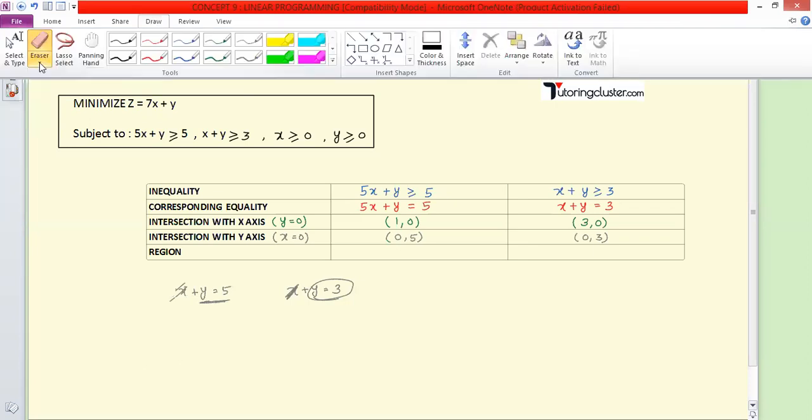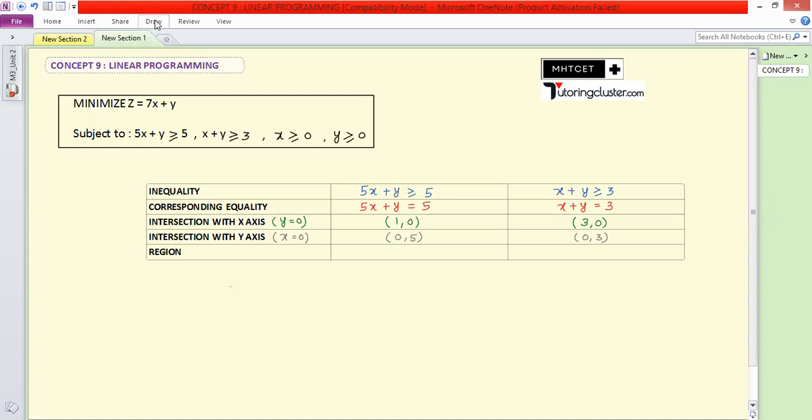Next, we need to find which region to select - is it on the origin side or non-origin side? The origin has coordinates (0,0). We put (0,0) into the inequality. The inequality is 5x plus y greater than or equal to 5. Putting x and y equal to 0 gives 0 greater than or equal to 5. Is 0 greater than 5? No. That means origin is not included, so the solution will not include origin. We will select the non-origin side. So 0 greater than or equal to 5 is false.